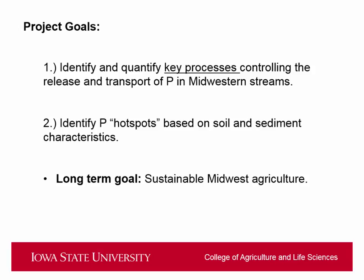We have two main project goals. Number one is to identify and quantify the key processes controlling the release and transport of phosphorus in Midwestern streams. Number two is to identify hot spots in the watershed based on soil and sediment characteristics that are delivering the most phosphorus, so we can target those with specific BMPs. The long-term goal is sustainable Midwest agriculture — good water quality without excessive constraints on farmers or negative impacts on their bottom line.